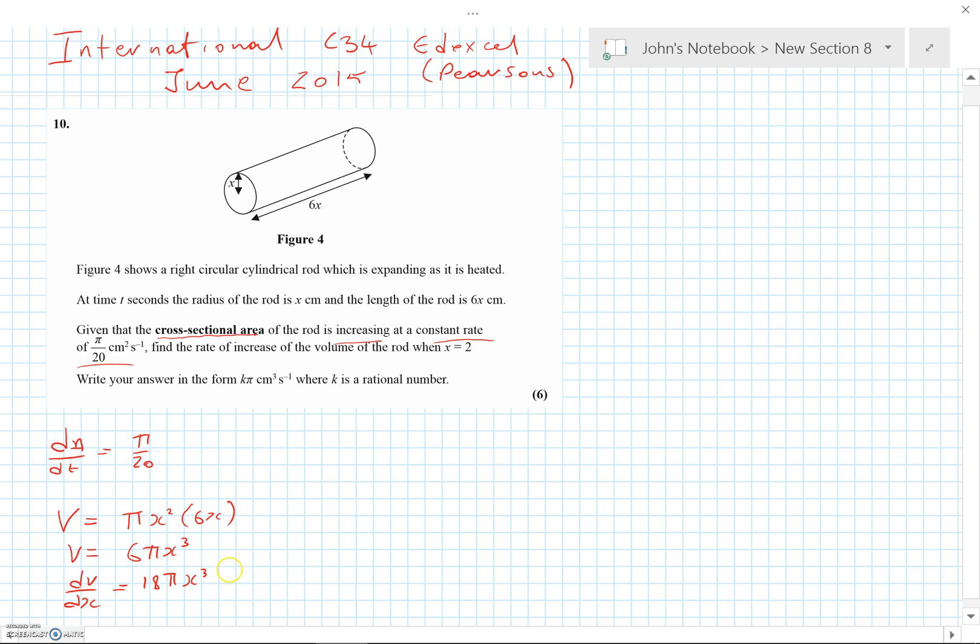Now, what I always like to do is write down what we've been asked for and then try and think strategically about what we're going to do. We've been asked for the rate of change of volume, dV/dt. If I can find dx/dt...